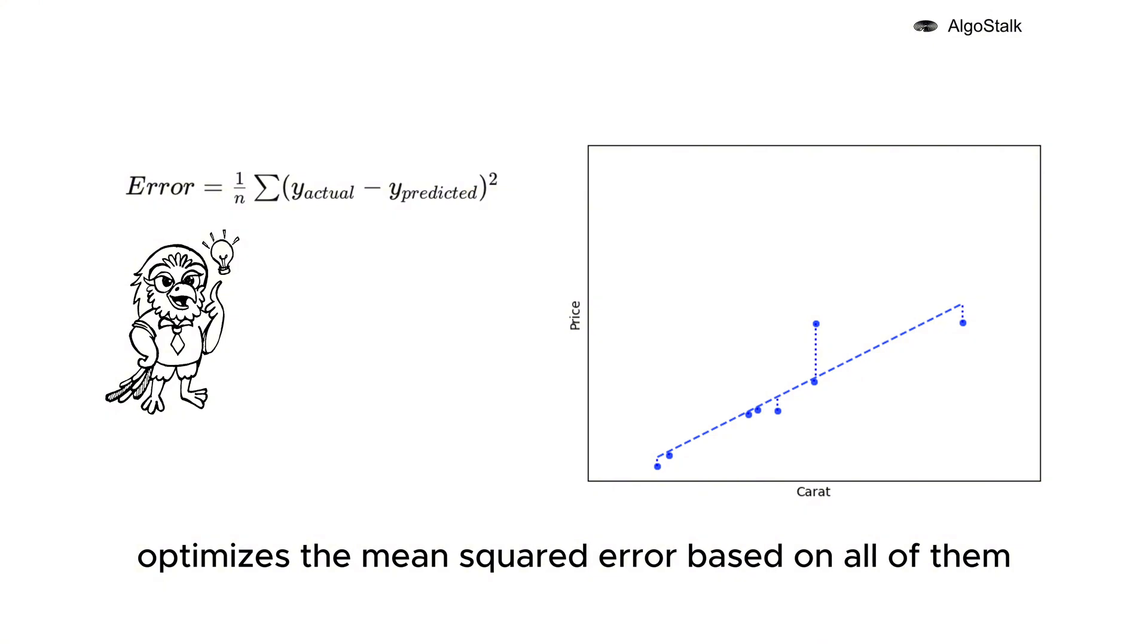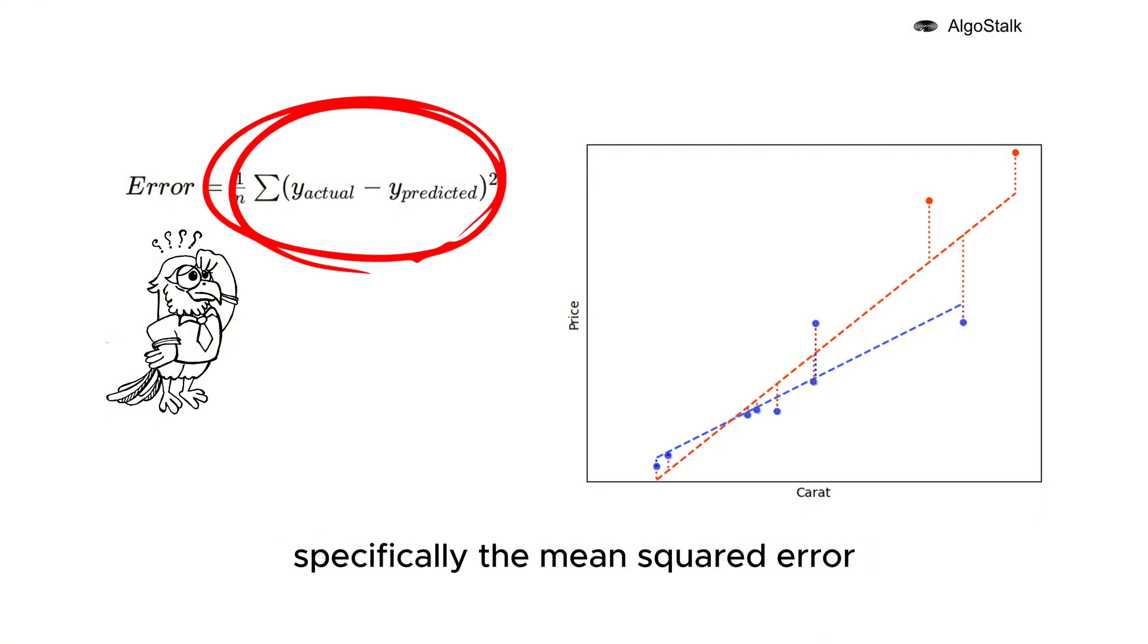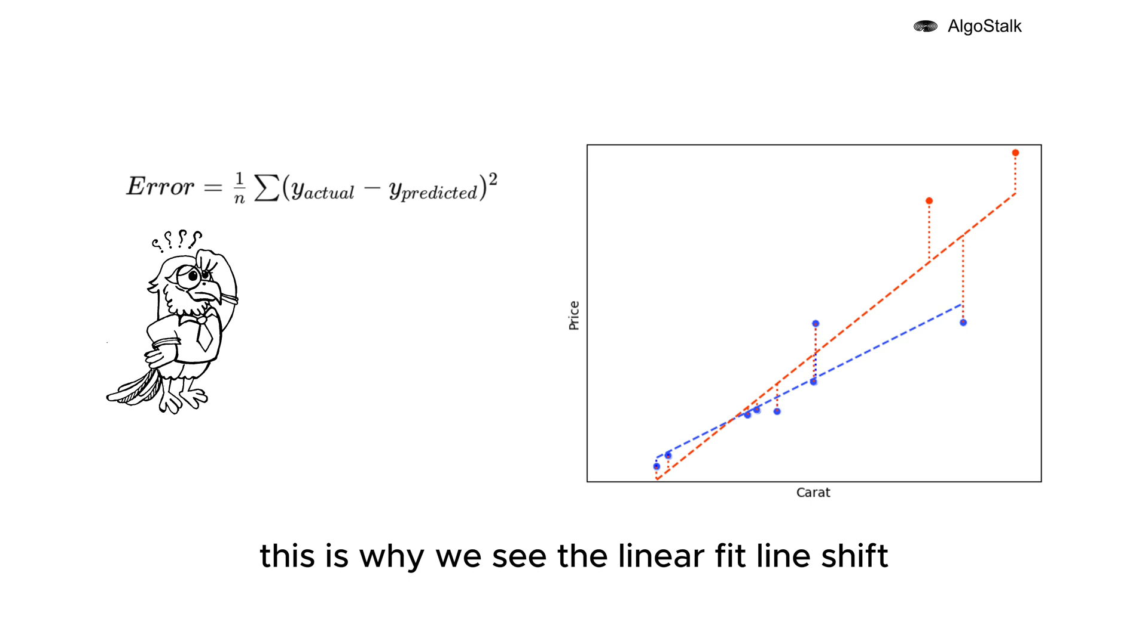But wait, what happens if I add just two outliers to this mix? Can you see how much the line shifts? Because their errors are so large, their impact on our overall error function, specifically the mean squared error, is significant. This is why we see the linear fit line shift dramatically.